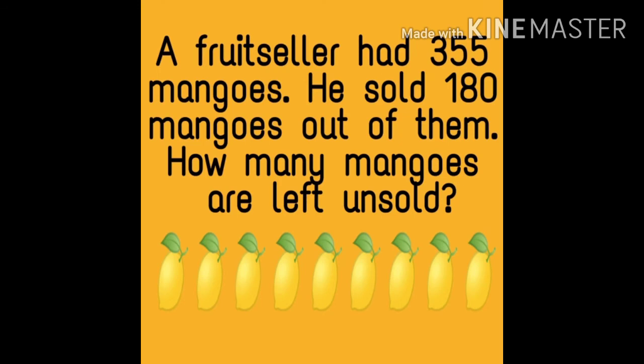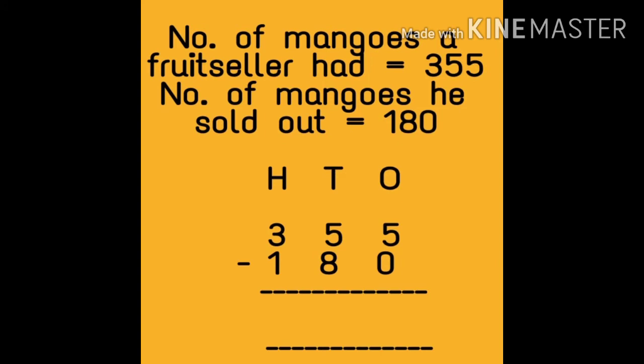Now let's come to another question. A fruit seller had 355 mangoes and he sold 180 mangoes. How many mangoes are left unsold? You know the total number of mangoes and how many the fruit seller sold. You have to find the number of mangoes left unsold. First statement: number of mangoes the fruit seller had is equal to 355. Second statement: number of mangoes he sold is equal to 180.